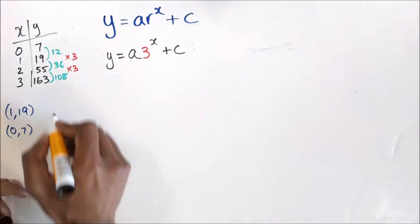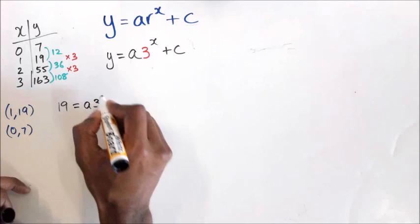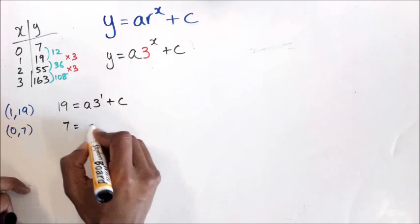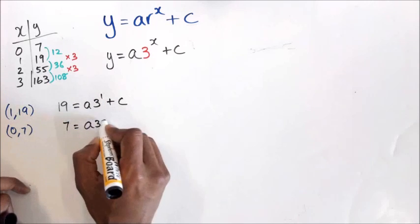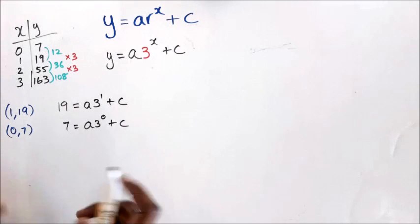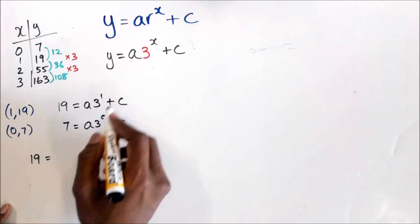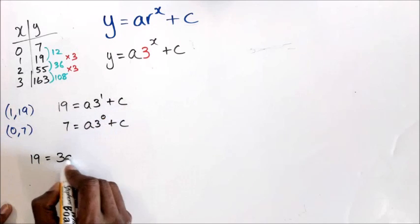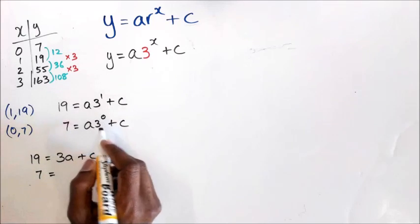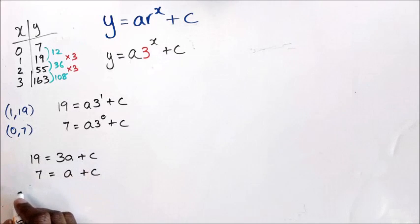I have 19 equals a times 3 to the power of 1 plus c, and 7 equals a times 3 to the power of 0 plus c. Writing these as two simultaneous equations: 19 equals 3a plus c, and 7 equals a plus c.